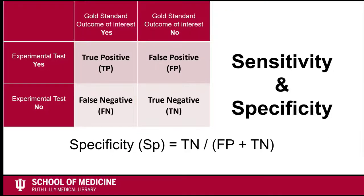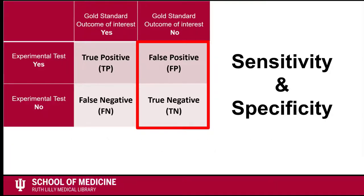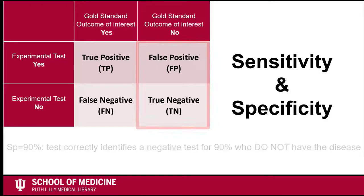Specificity, or SP, equals true negatives over false positives plus true negatives, and this is the percentage of people correctly identified as not having the outcome of interest by the experimental test out of all of the people who don't have the outcome of interest. Likewise, if a test is 90% specific, it means that the test correctly identifies a negative test for 90% of the people who do not have the disease.